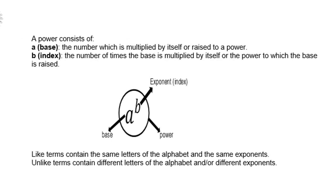A power consists of a base, the number which is multiplied by itself or raised to a power, and the index, the number of times the base is multiplied by itself, or the power to which the base is raised. If you look at the drawing, you can see that a is the base, b is the exponent, and both a and b together is the power.